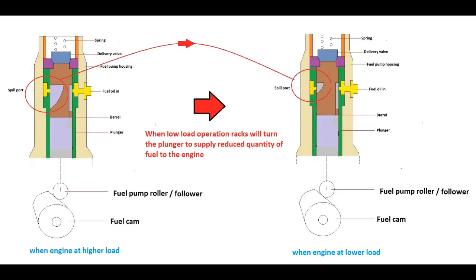If a reduction in load is required then the rack rotates the plunger, altering the relative position of the helix to the suction spill port. This means that the plunger will travel a shorter distance between start and end of delivery, thus reducing the amount of fuel pumped to the injector. Because the shape of the cam is fixed, the plunger still moves the same vertical distance as before.